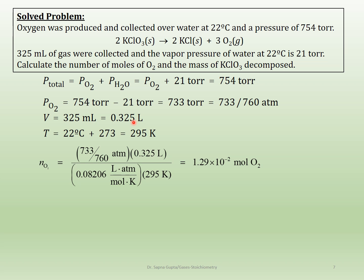We are calculating the number of moles using PV = nRT. You have pressure, volume, temperature, and the gas constant given, so you solve for n. The pressure of oxygen is found by subtracting the vapor pressure of water (21 torr) from the total pressure (754 torr), then dividing by 760 to get atmospheres. Solving for n gives 1.29 × 10⁻² moles of oxygen. That is the first part of the problem — quite straightforward. The only thing to remember is to use the correct pressure.